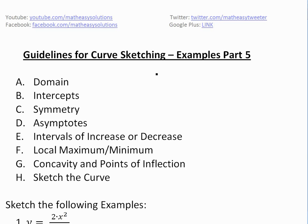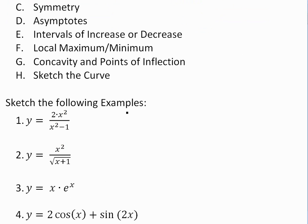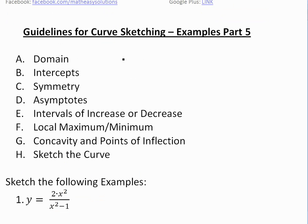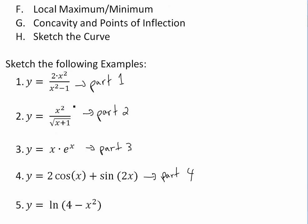It's time for another Math Easy Solution to discuss further into guidelines and curve sketching. We'll look at examples of part five of this series. Basically, we go through the guidelines: domain, intercepts, symmetry, asymptotes, intervals of increase and decrease, local max and min, concavity, and points of inflection. Then from using this information, we sketch a curve. You'll see the video info link below on the summary of these guidelines and also the previous examples — parts one through four.